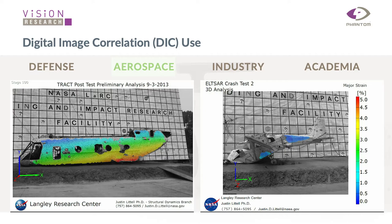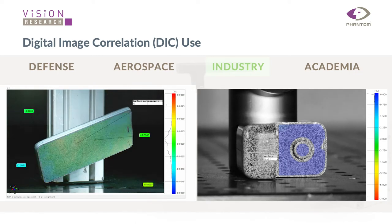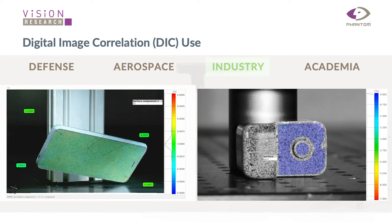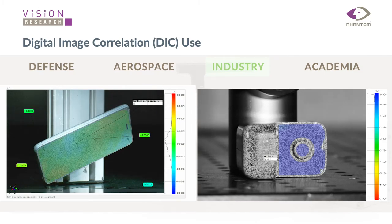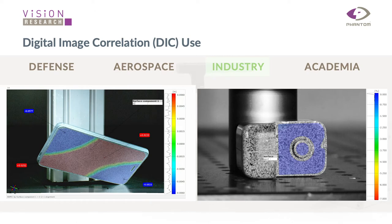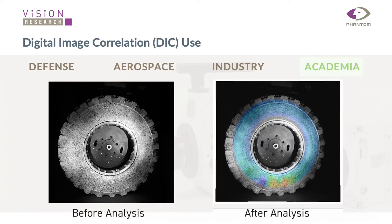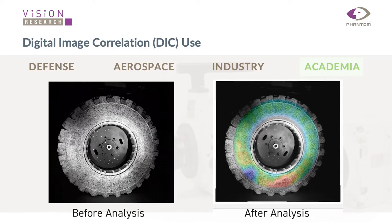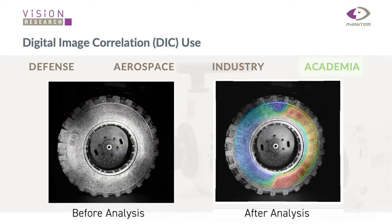We also do work with industry. For example, we look at how devices undergo stress and strain as they're dropped. When you drop your cell phone, if you impact it at the wrong angle or the wrong speed, it will lead to deformation and cracking. On the right-hand side is a simple component test where a bearing impacts a small component. We also do academic work, and after the analysis you can see the color maps that are generated, showing where stress and strain concentrates, as the video is played back.